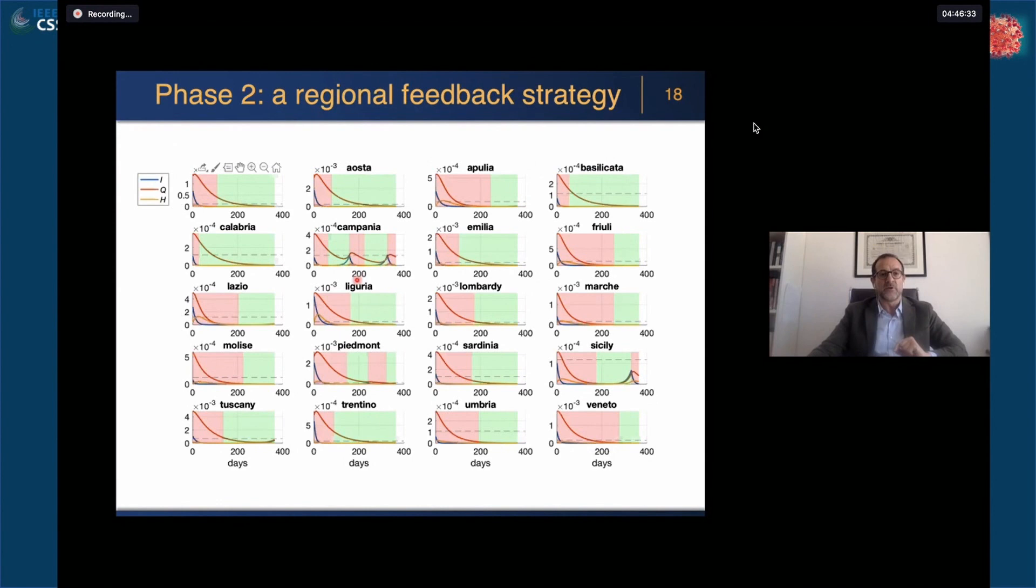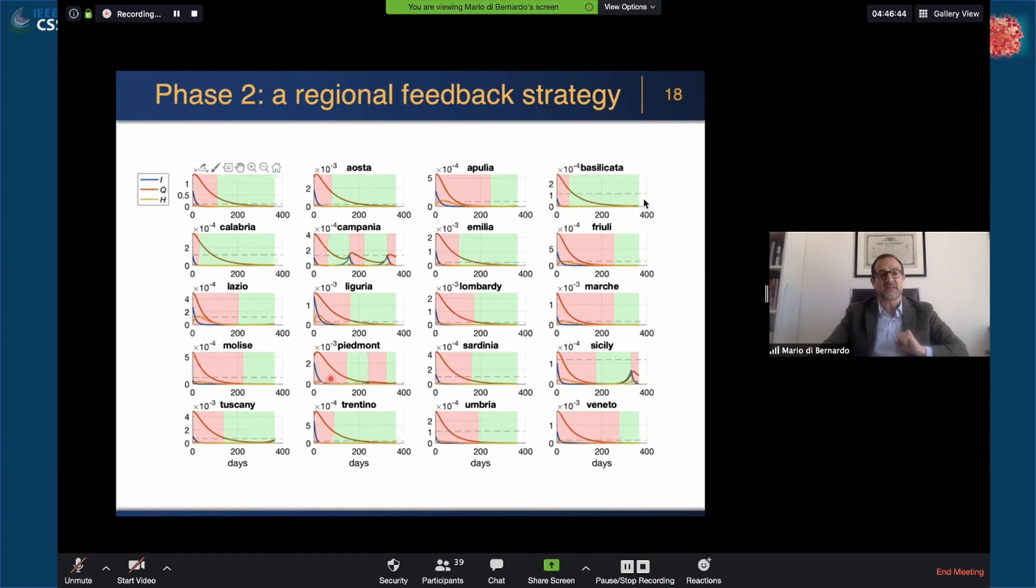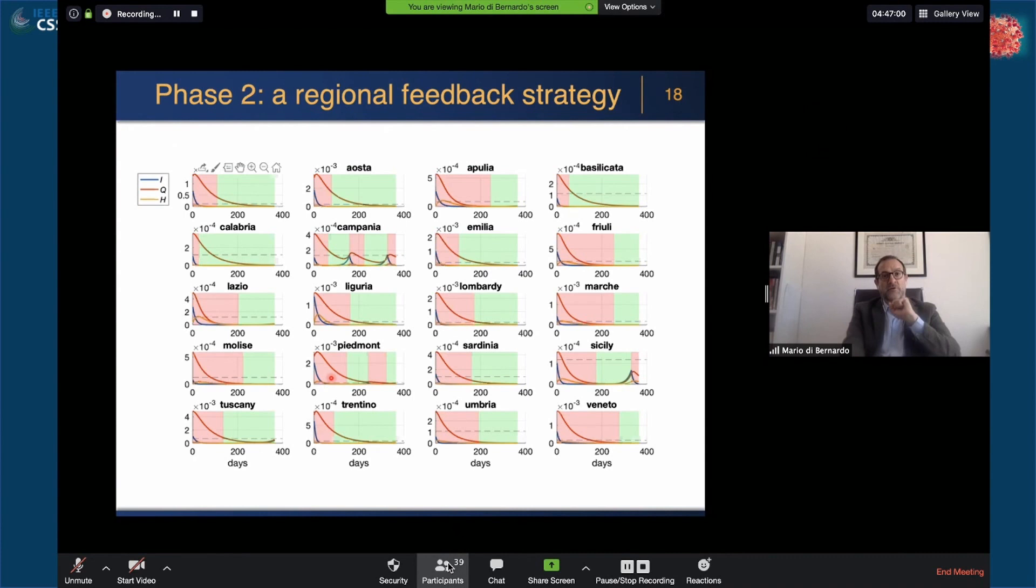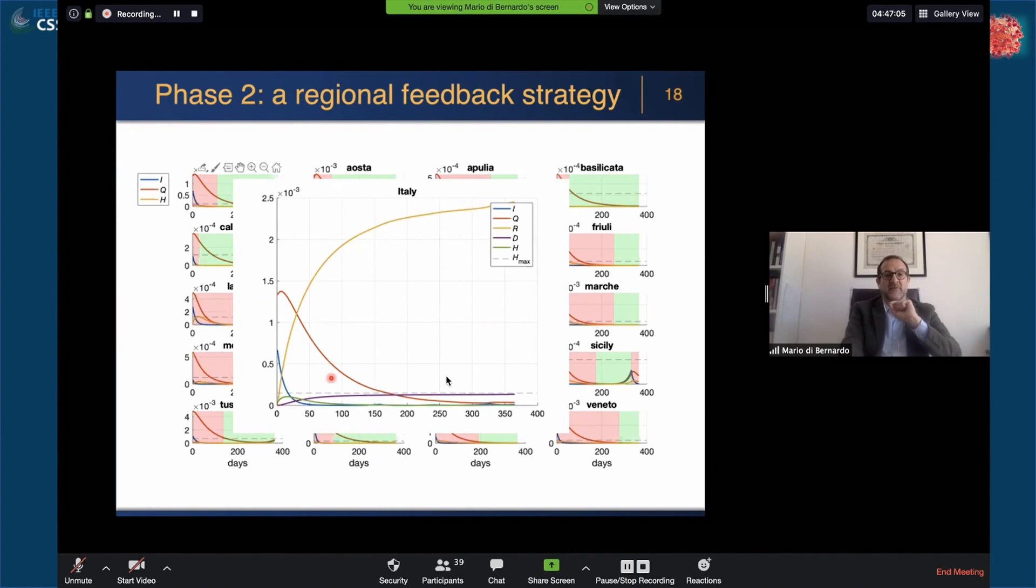If we do that, here you see now that we are successfully able to keep all the number of hospitalizations below the saturation line in all regions. Red shaded areas show the lockdown in place and green areas show that the lockdown has been released. This is in the presence of flows, but flows are to be dealt with very carefully because of what I said earlier.